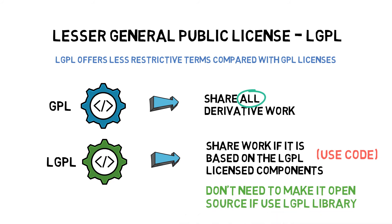For example, if your software uses some LGPL source code, you must share your code as well as the original GPL licenses. However, if you are just using an LGPL library instead of the code snippets, you don't need to make your software open-source.